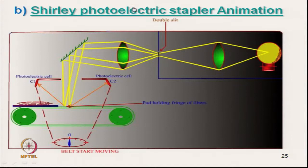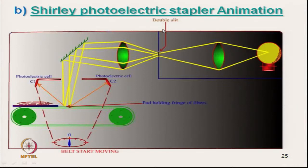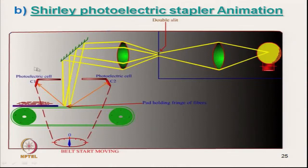The fibre fringe is placed on a black pad on the conveyor belt and moves gradually. One light source provides light through a lens arrangement into a double slit, producing two light sources that fall at two very close points. From those points, reflections are received by photoelectric cells C1 and C2.